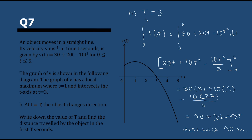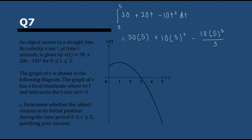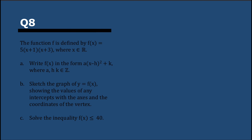Next, we have to determine whether the object returns to its original position. For that, the displacement would need to be 0. We integrate between 0 and 5. Substituting t = 5: 150 + 250 − 1250/3, giving a total of −50/3. Since the displacement is not 0, the object does not return to its original position.